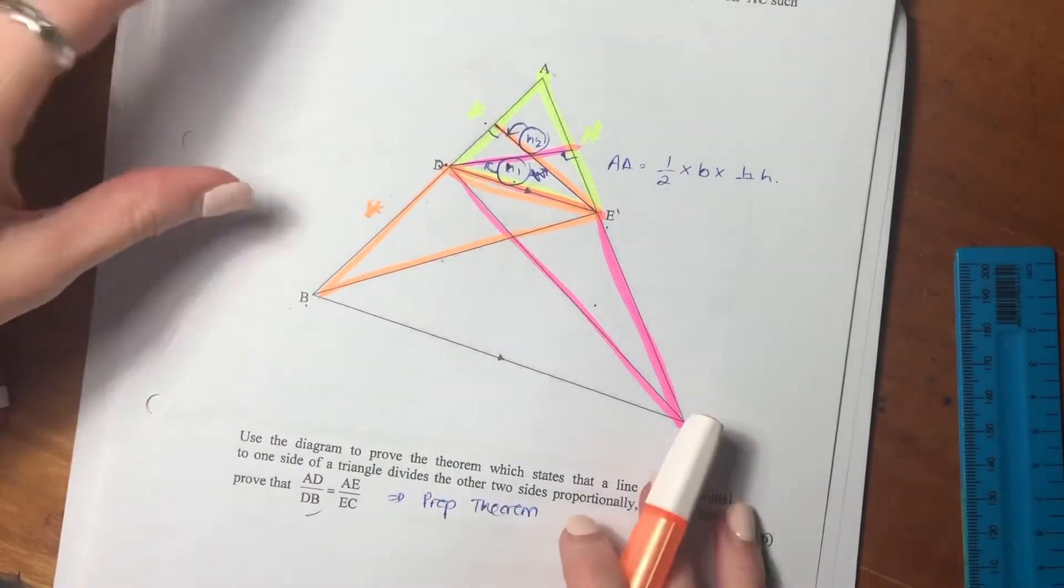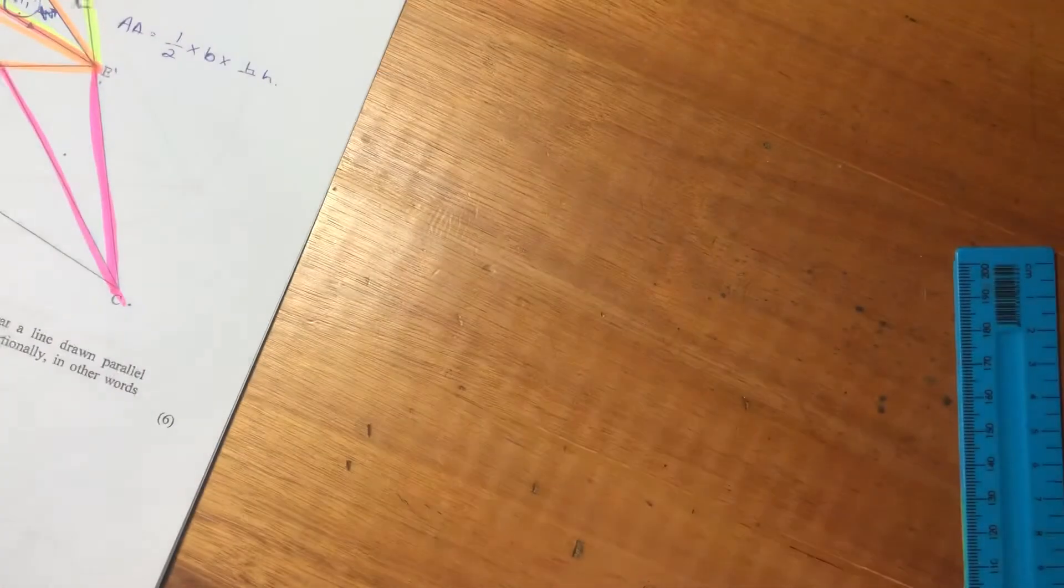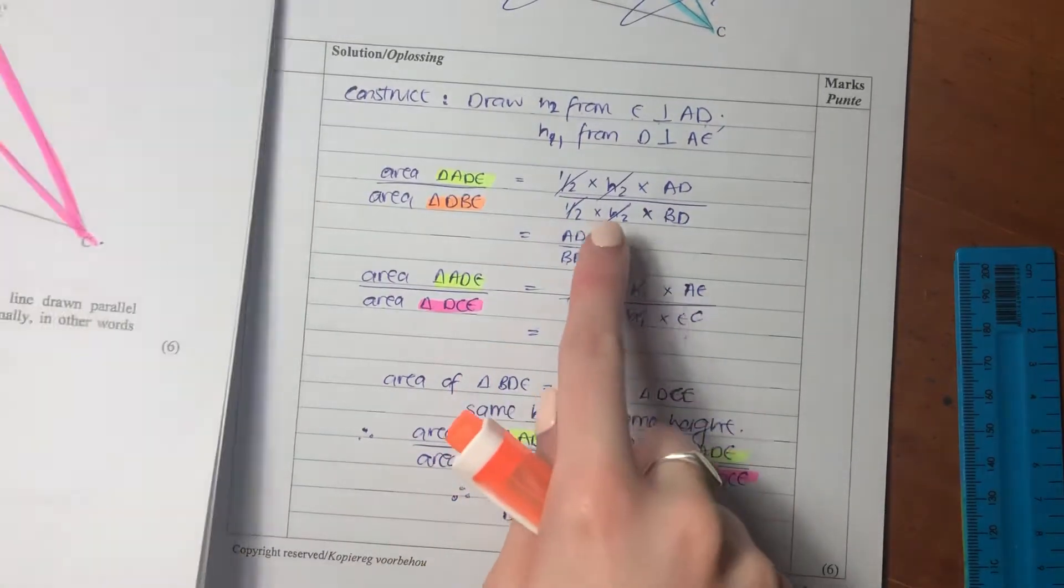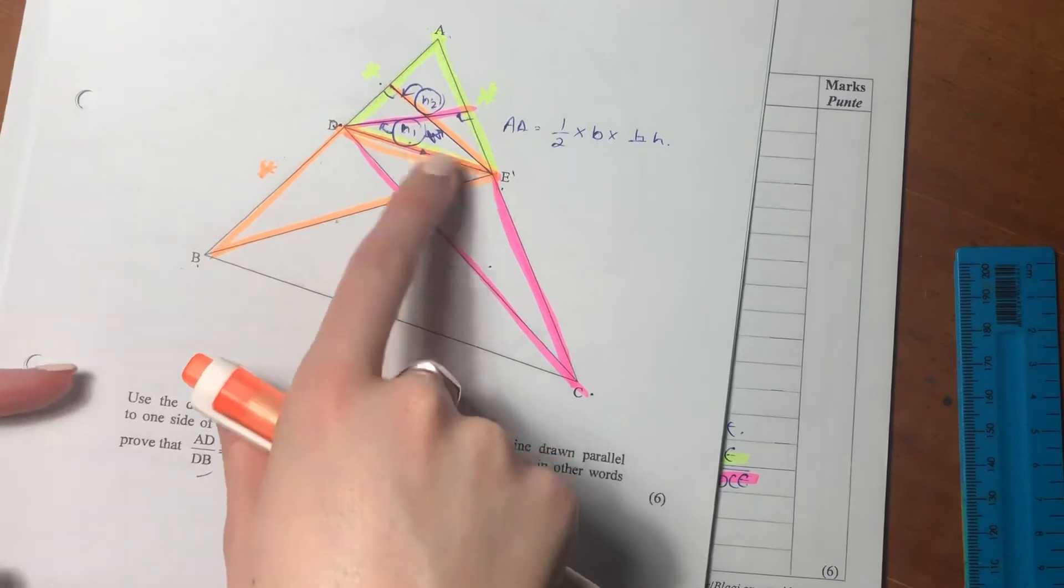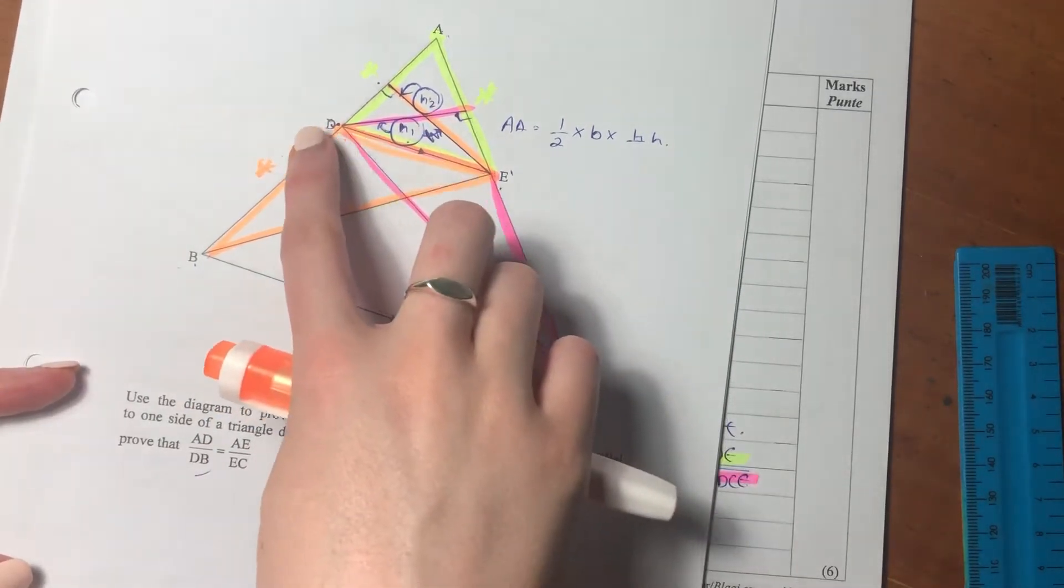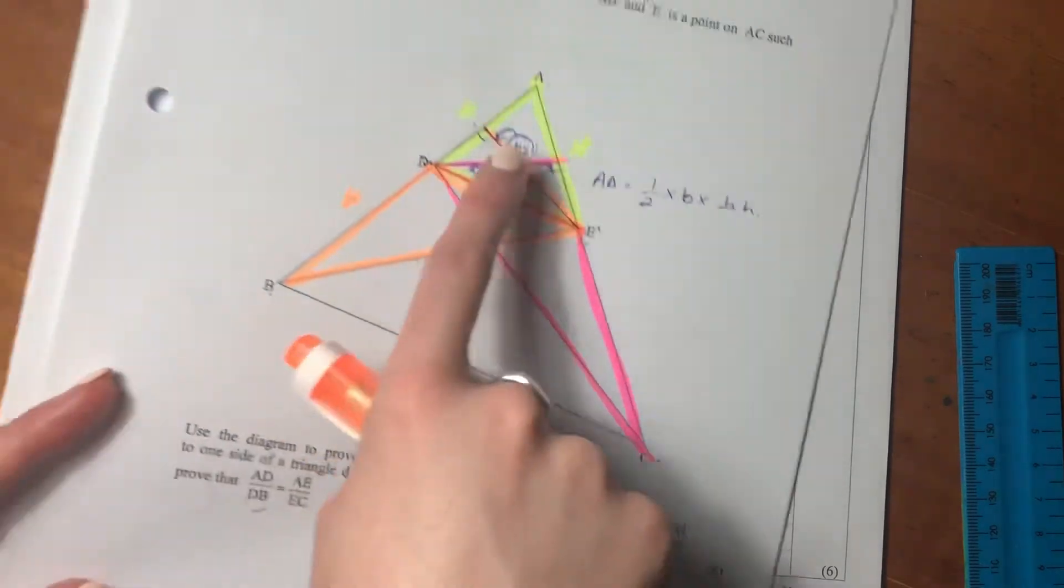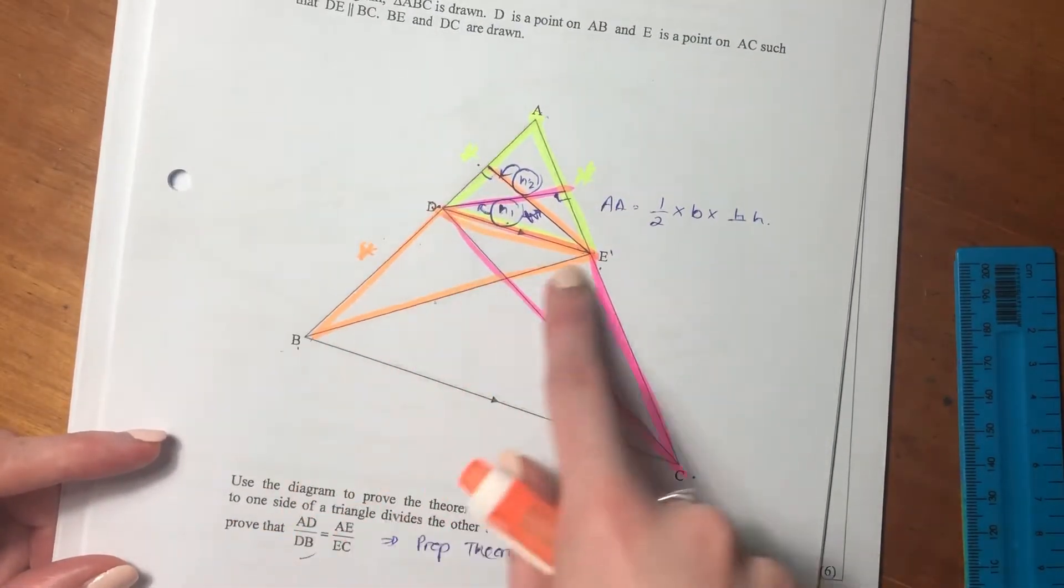So what I've said is, let me just go to the correct page, sorry. I've said that we draw an H2 from E perpendicular to AD, so it's basically a height, and then H1, which is drawn from D perpendicular to AE. Then I've said, let's compare the area of ADE to the area of DBE.